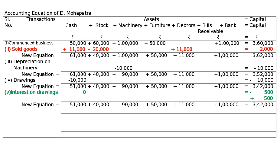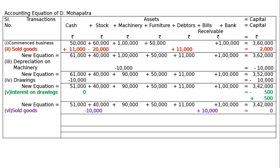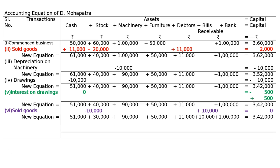Transaction 6: Goods sold to Gupta for rupees 10,000; received a bills receivable for 3 months. Sold goods on credit for a bill, so minus from stock and added to bills receivable by 10,000. The net effect is zero — LHS equals RHS. A new equation results.